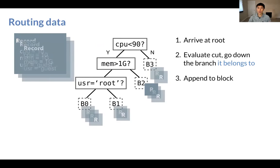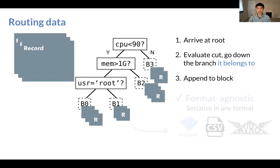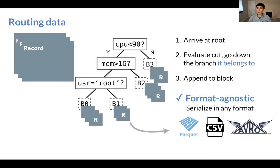So the dataset has a bunch of records. We can perform this routing on the entire dataset in an embarrassingly parallel fashion. So in the end, we will arrive at a block level layout for the entire dataset. Notice that we can serialize the data blocks in any format of your choosing, like Parquet or CSV.